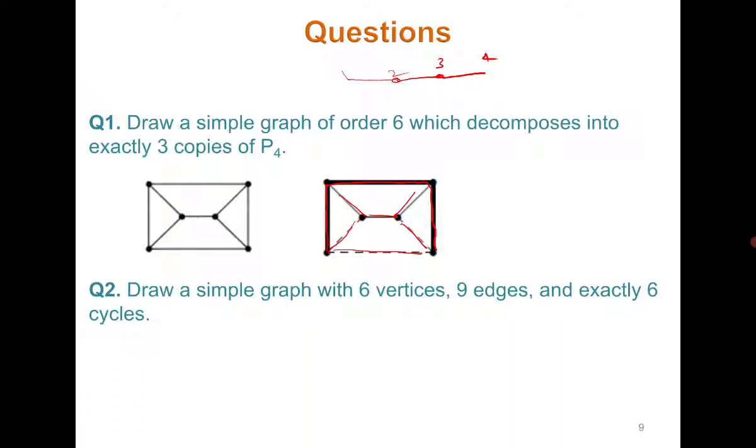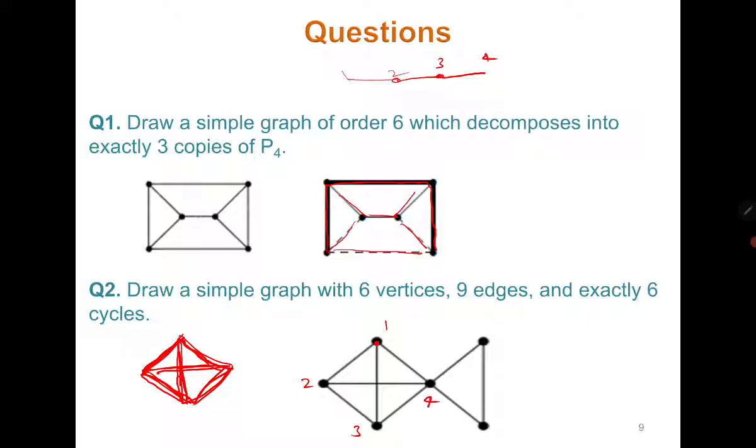Draw a simple graph with 6 vertices, 9 edges, and exactly 6 cycles. Again there can be multiple answers. I am showing you one of the answers. So here you can see that 6 vertices and 9 edges are visible. Now let us look for 6 cycles. If you see this structure, then inside there are 4 triangles. This is 1 triangle, then this is 2nd, this is 3rd, this is 4th, and outside also there is a cycle of length 4. So 5 cycles are there and this is the 6th cycle. Now how do you look at the cycles? By looking at figures you may not be able to count all the cycles.